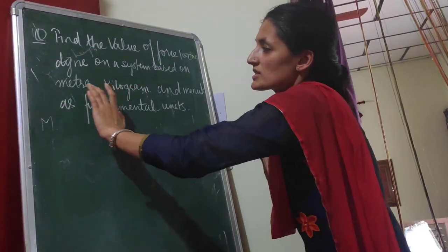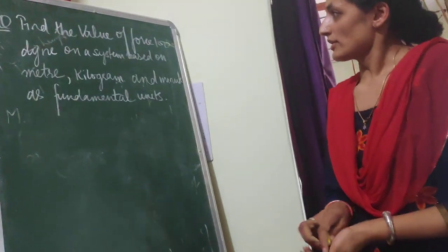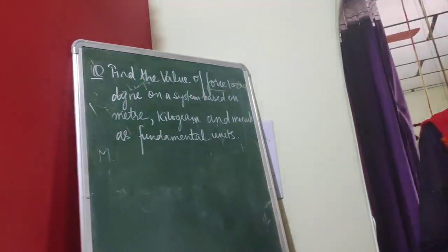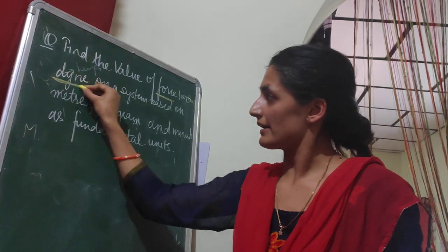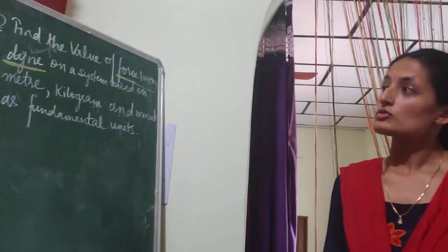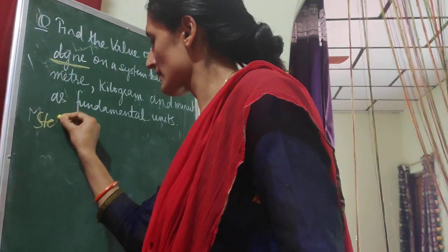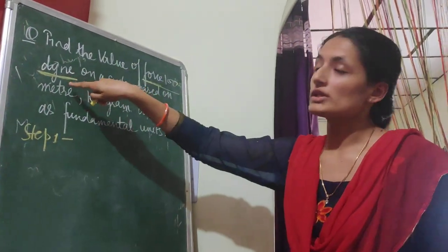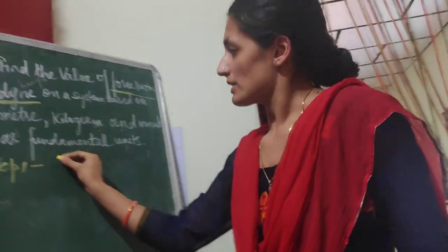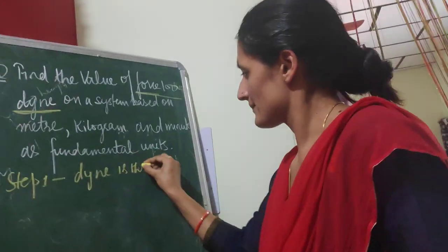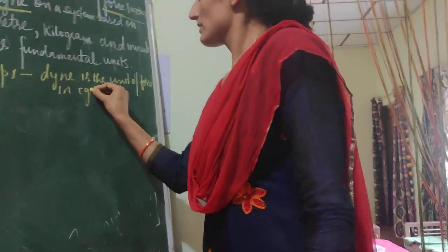From the CGS system you are going to a system of units where meter, kilogram, and minute are considered as your fundamental units. Step one for such conversions: you must know the force is 100 dyne. Dyne is the unit of force in the CGS system. Step one is to know the unit that is given and identify which system that unit belongs to.